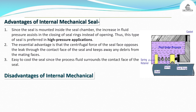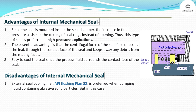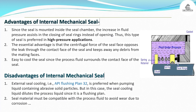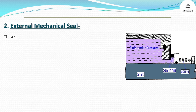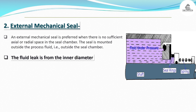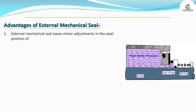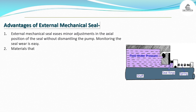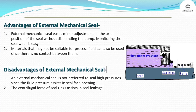Disadvantages of internal mechanical seal: External seal cooling, i.e., API Flushing Plan 32, is preferred when pumping liquid containing abrasive solid particles. However, the seal cooling liquid dilutes the process liquid since it is a flushing plan. Seal material must be compatible with the process fluid to avoid wear due to corrosion. External mechanical seal: An external mechanical seal is preferred when there is no sufficient axial or radial space in the seal chamber. The seal is mounted outside the process fluid, i.e., outside the seal chamber. The fluid leak path is from the inner diameter to the outer diameter of the seal. Advantages: external mechanical seal eases minor adjustments in the axial position of the seal without dismantling the pump; monitoring the seal wear is easy; materials that may not be suitable for process fluid can also be used since there is no contact between them. Disadvantages: an external mechanical seal is not preferred to seal high pressures since the fluid pressure assists in seal face opening.